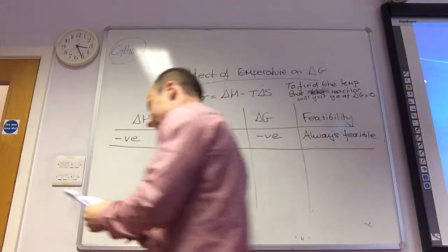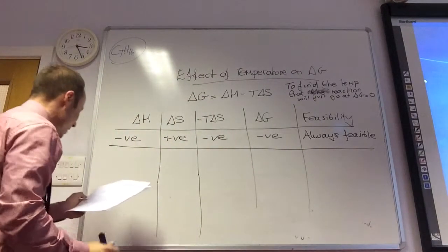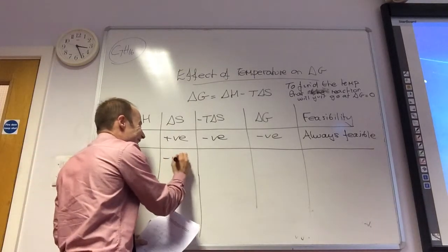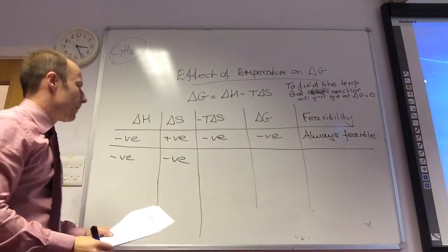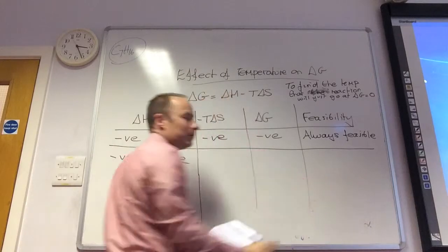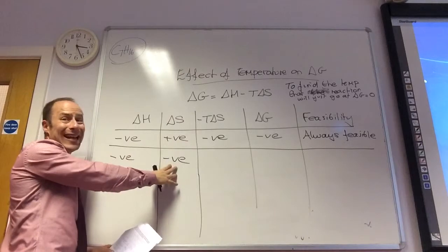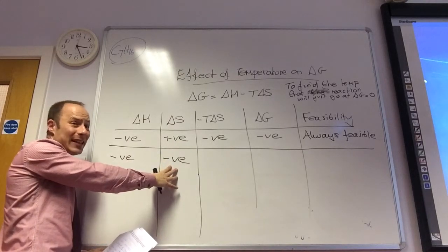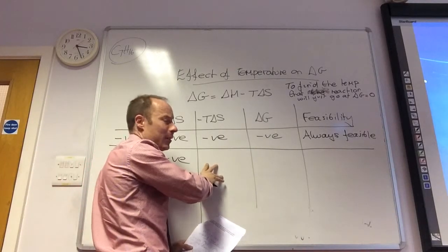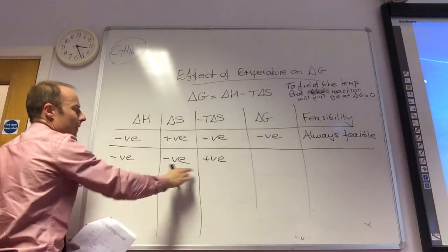The next case — you need to leave yourself a couple of lines here. Delta H is negative, and delta S is now negative. Delta H is negative, so it's exothermic. Delta S is negative, so the entropy is decreasing. What sign will minus T delta S now be? Positive. So it's going to be a balance between these two figures.